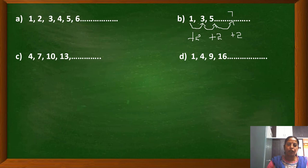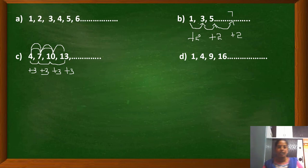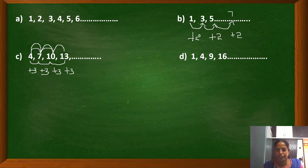Another example: 4, 7, 10, 13 — here we are adding plus 3 each time. If you add plus 3 to the first term you get the second term, plus 3 to the second term gives the third term, and so on. To get the fourth term, we are adding the definite number three times. In contrast, 1, 4, 9, 16 — from 1 to 4 is plus 3, from 4 to 9 is plus 5, from 9 to 16 is plus 7 — the difference is not constant, so this is NOT an arithmetic progression.